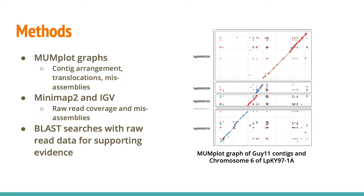To achieve this, we had many bioinformatics tools available to us. We used RStudio and a software called NUMplot to compare our genomes to an assembled genome of another strain. You can see part of a graph that is comparing GI-11 and strain LPKY97-1A. These graphs gave us insight on potential connections, translocations, and misassemblies.